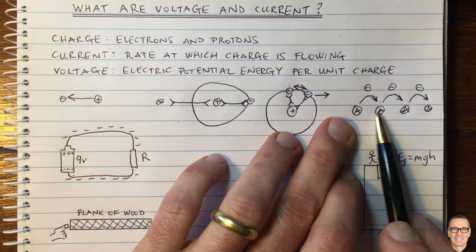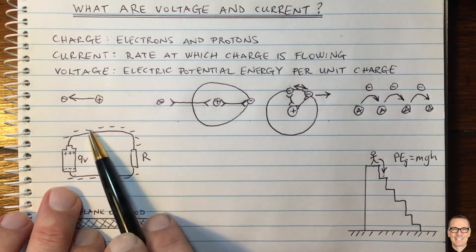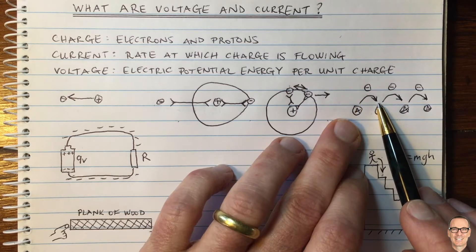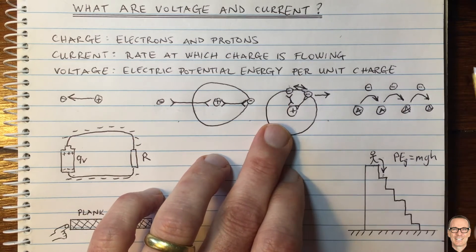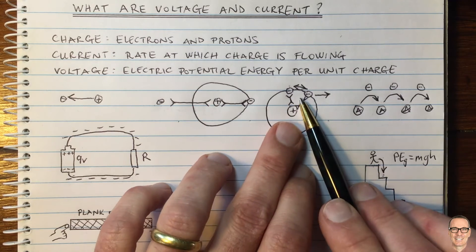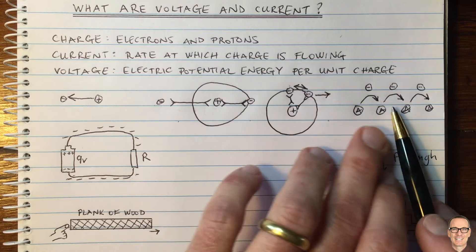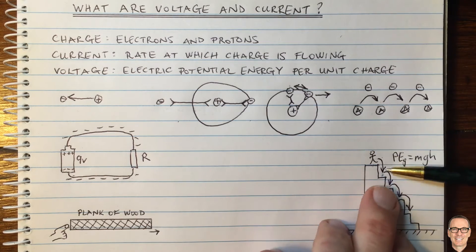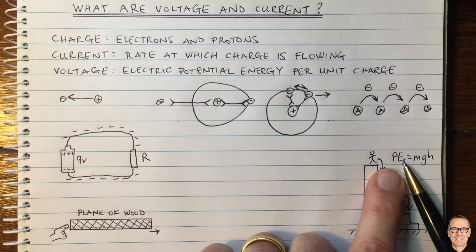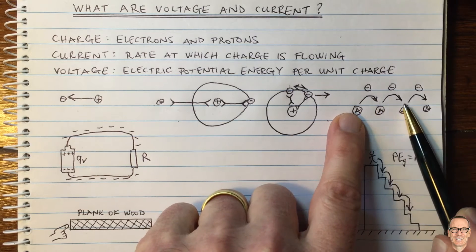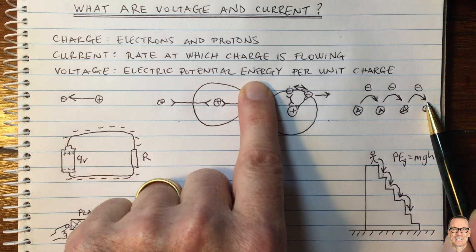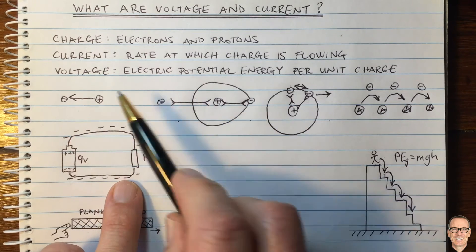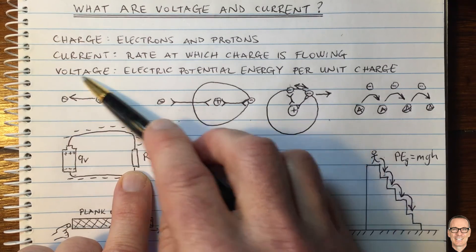In our electrical system, electrons moving along the wire move from atom to atom — just like stepping from step to step. Each time there's kinetic energy as it moves from atom to atom, and then when it combines with the next atom, that kinetic energy is lost before it gets expelled again. Just as the person lowers their gravitational potential energy with each step, each time an electron goes from one atom to the next it lowers its electric potential energy — it lowers its voltage.